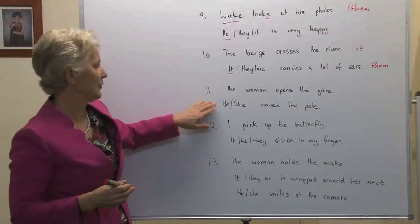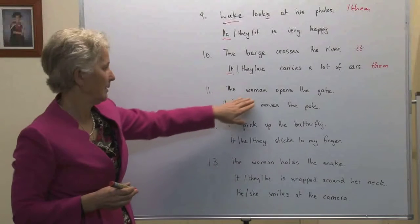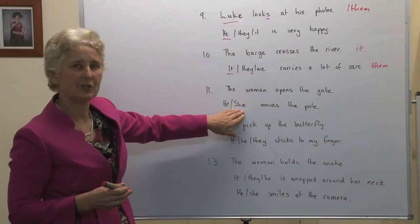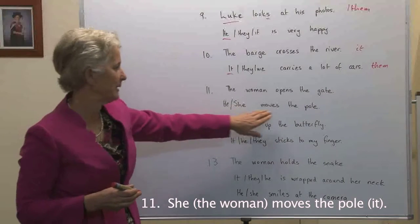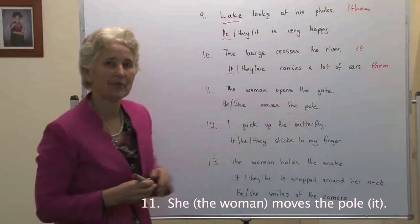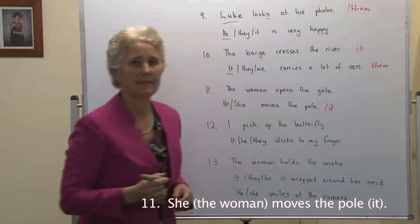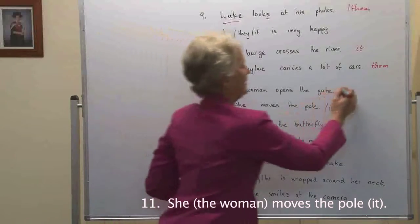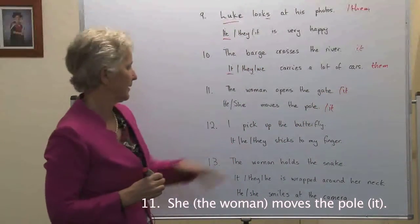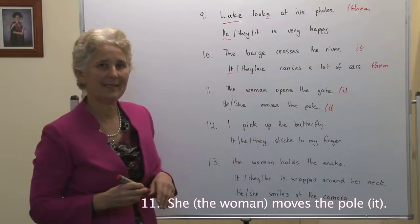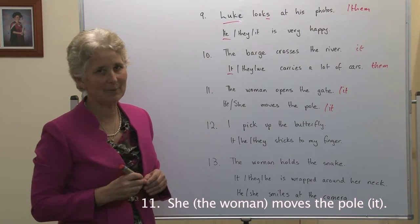Number eleven: The woman opens the gate. He or she moves the pole. The woman becomes she. We're referring to what she is doing — she moves the pole. If we wanted to replace the pole, it would be it as an object. The gate would also be object, it — a thing. We've got the s in the third person singular, simple present tense.